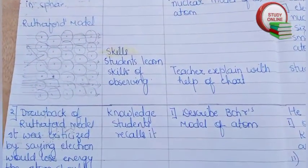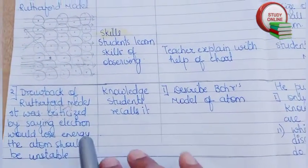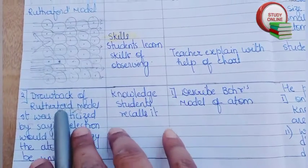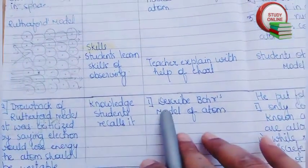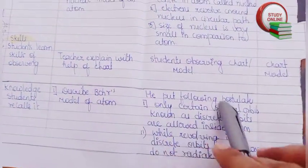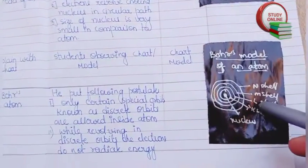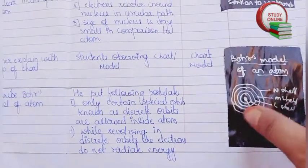Now here you can see Presentation 2. We are going to teach them about drawbacks of Rutherford's model and here describe Bohr's model of an atom. Here you can see the answer, this is blackboard work.